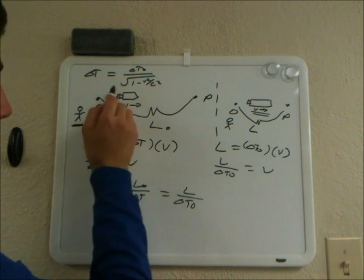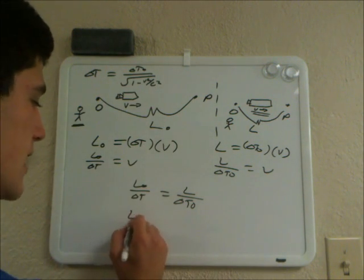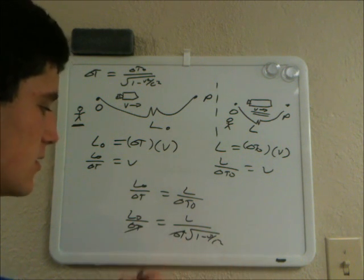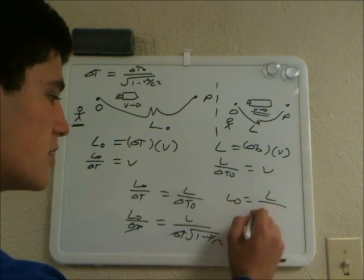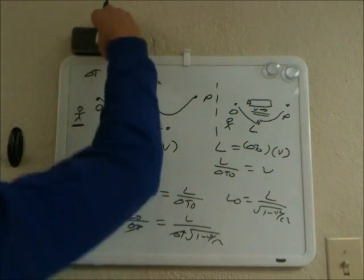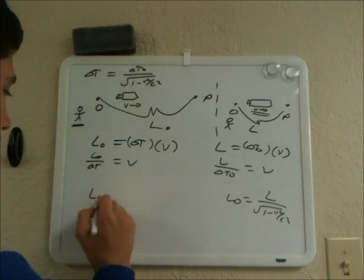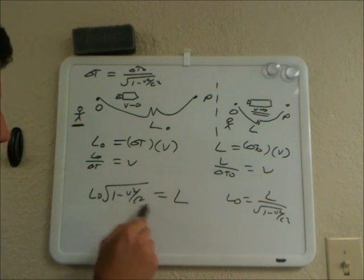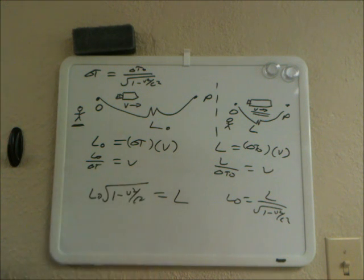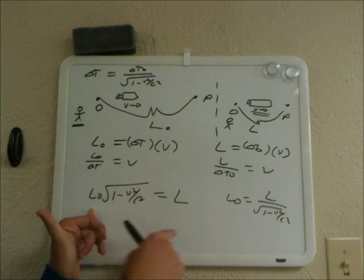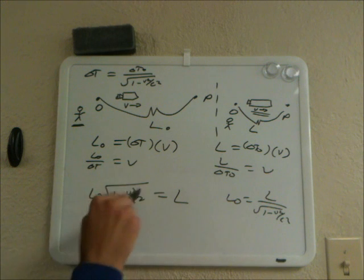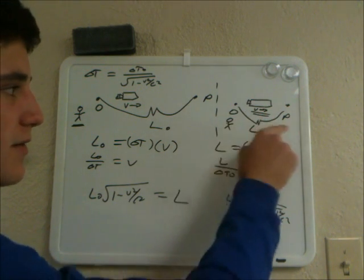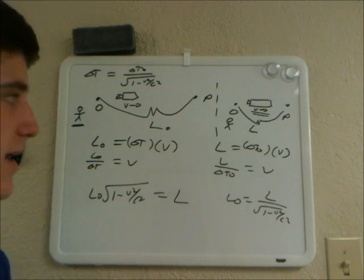We know that delta T naught equals delta T times the square root of (1 minus V squared over C squared). Substituting: L naught over delta T equals L over (delta T times the square root of (1 minus V squared over C squared)). The delta T's cancel, giving L naught equals L over the square root of (1 minus V squared over C squared), or written properly: L equals L naught times the square root of (1 minus V squared over C squared). Say L naught is 10 meters and the factor is 0.8 — then L is 8 meters. That is length contraction.